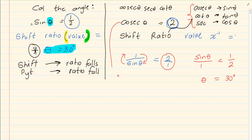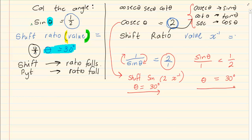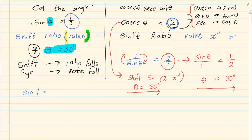So whether you use cosec — pressing shift, sin, 2, then x to the power of minus 1 — you would end up with 30 degrees. Or if you changed it using algebra, you would still end up with 30 degrees. Cosec, sec, and cot are not usually asked when solving for angles, but sin, cos, and tan are consistently asked. So remember: shift, the ratio, and the value.